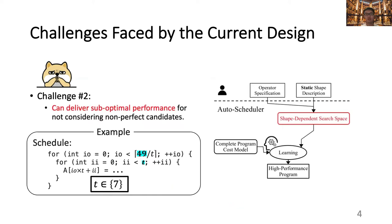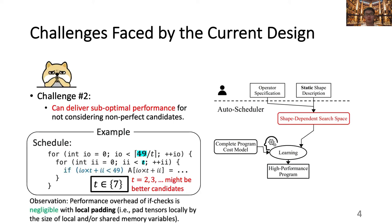The second challenge the current auto-scheduler is facing is that it can deliver suboptimal performance for not considering non-perfect candidates. Still the same tiling example, clearly the current set with a single candidate is too limited, as tiling candidates 2, 3, etc. are also viable, and they might deliver better performance compared with 7. Although it is correct that extra auto-boundary checks have now to be injected inside the loop body for the program to be correct, we observe that the performance overhead of those auto-boundary checks can be negligible with the local padding code generation optimization technique, a technique that pads tensors locally by the size of the local workspace.